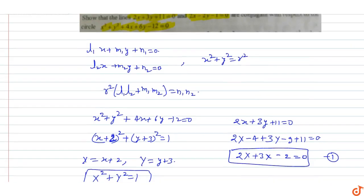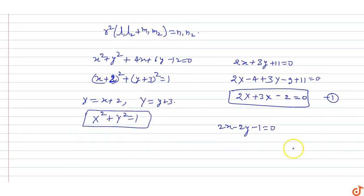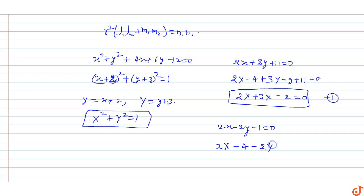For the second line 2x − 2y − 1 = 0, substituting x = X − 2 and y = Y − 3: 2(X − 2) − 2(Y − 3) − 1 = 0, giving 2X − 4 − 2Y + 6 − 1 = 0, which simplifies to 2X − 2Y + 1 = 0. This is the second equation in the new coordinates.